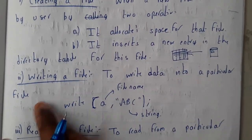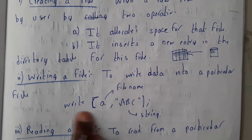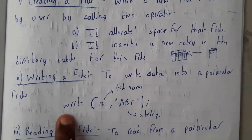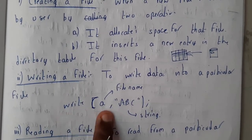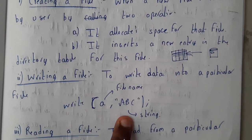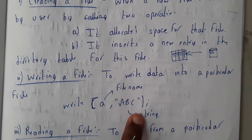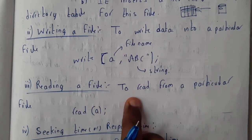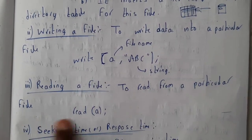The second operation is writing a file — writing data into the file. In some languages we can do it as: write(filename, string), where we pass the file name and the string we need to write. The third operation is reading a file: read(a), where 'a' is your file name.